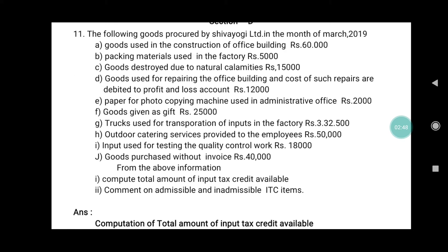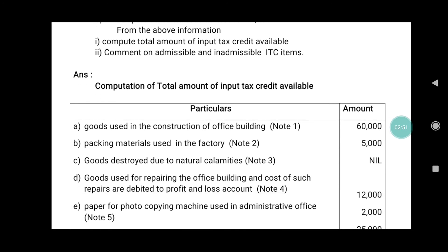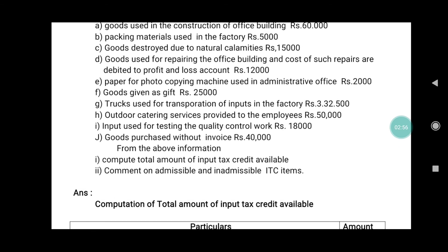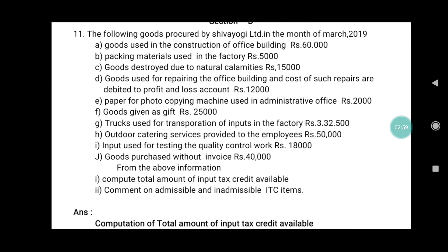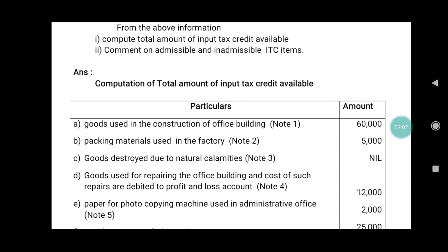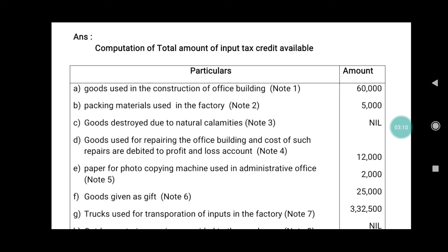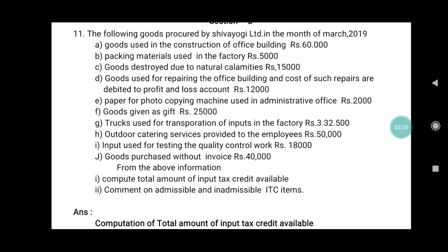Goods destroyed due to natural calamity: note number three, Rs. 15,000 — that should not be taken because it is a natural disaster not considered for tax. Goods used for repairing the office building, cost of repairs debited to profit and loss account: note 4, Rs. 12,000 — compulsorily taken because goods are used only for office purpose and related to business.